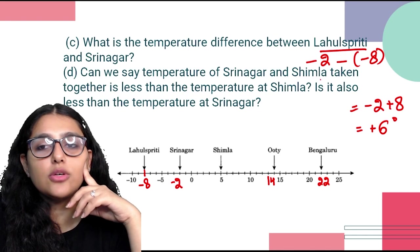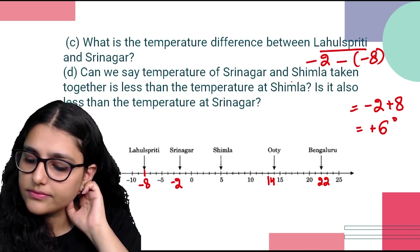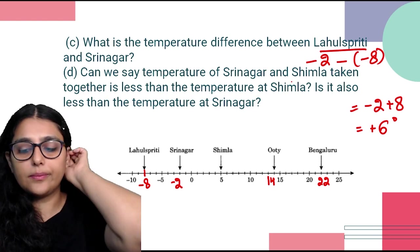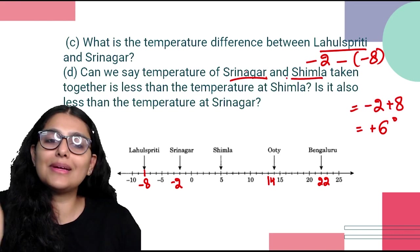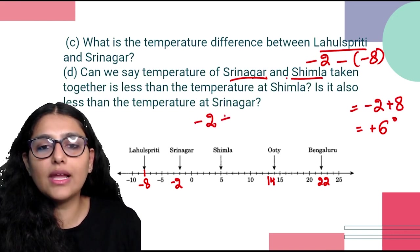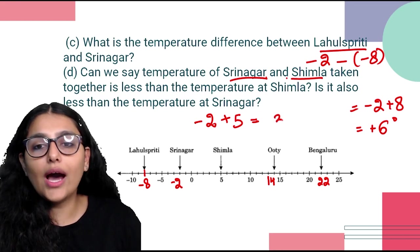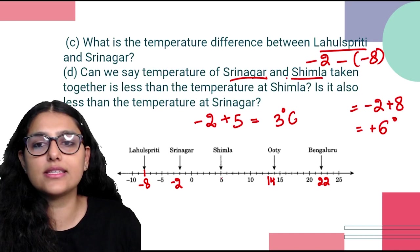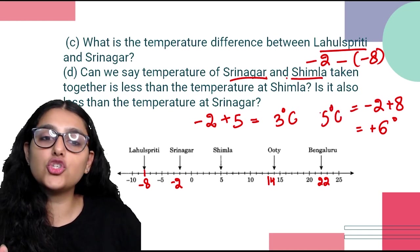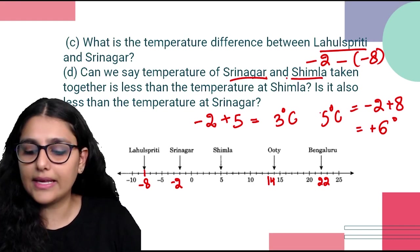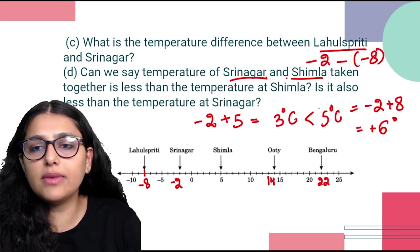Can we say the temperature of Srinagar and Shimla taken together is less than the temperature at Shimla? Adding them: Srinagar (minus 2) + Shimla (5) — one negative, one positive → subtract → answer is positive 3. Shimla alone is 5°C. Since 3 is less than 5, yes — the combined temperature is less than Shimla's temperature alone.